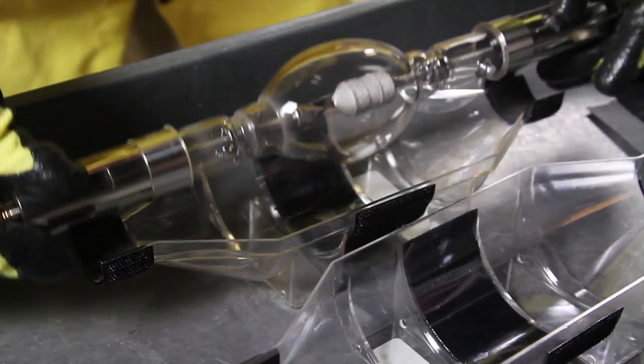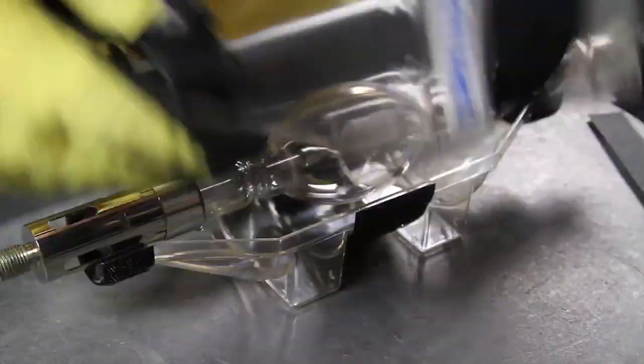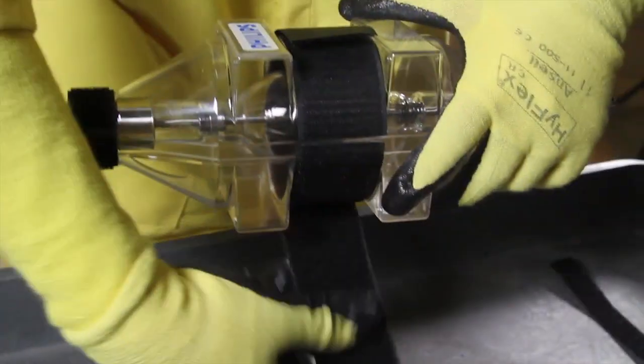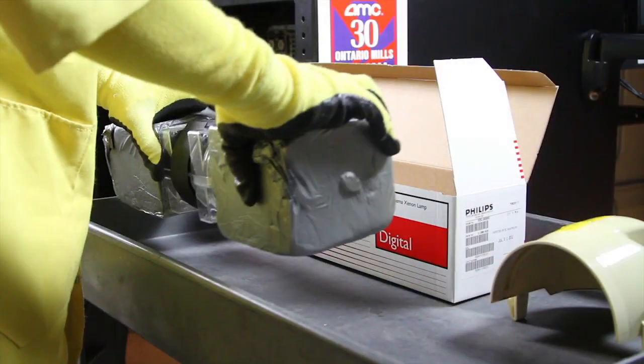Place the old lamp into its original protective carrier. Secure with Velcro straps and replace in its original packaging.